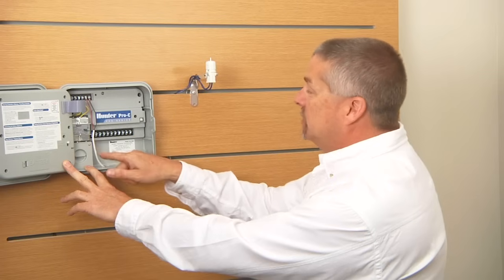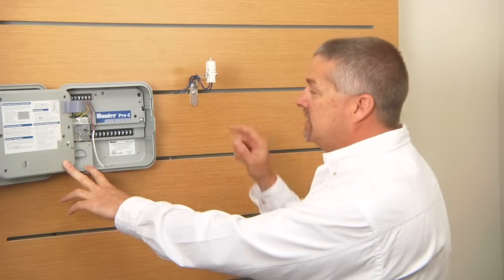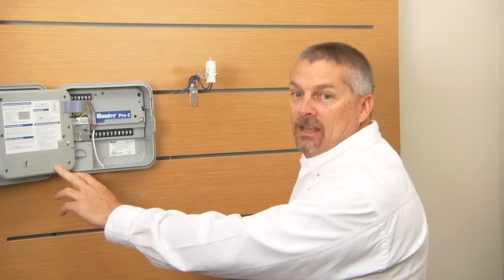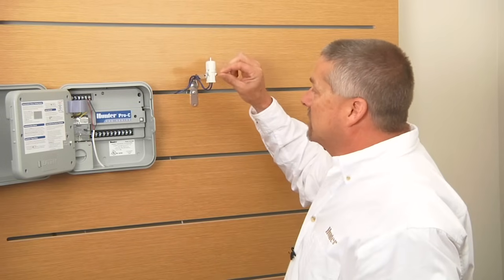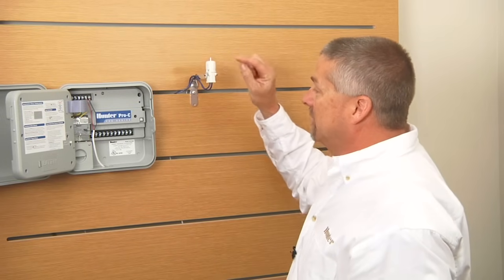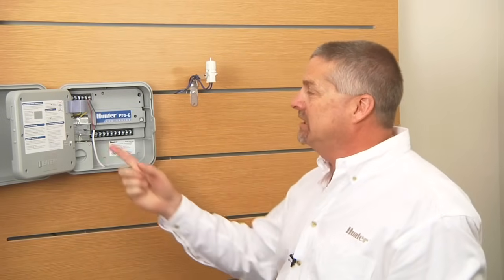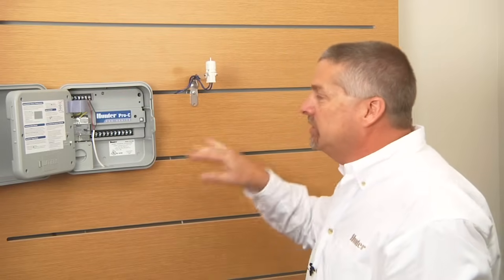It goes out to the sensor and it comes back. The wires that leave the controller, if those are damaged or they're cut, that means the circuit is open. The disc might be getting wet and swelling and opening and closing itself, but if it's not connected all the way back to the controller, that two wire circuit is now open and there's your sensor off message.